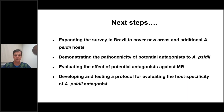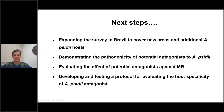The next steps we need to follow are: expanding the survey in Brazil to cover new areas and additional Austropuccinia psidii hosts; demonstrating the pathogenicity of potential antagonists to Austropuccinia psidii; evaluating the effect of potential antagonists against myrtle rust; and developing and testing a protocol for evaluating host specificity. As you will realise, we found lots of Fusarium.